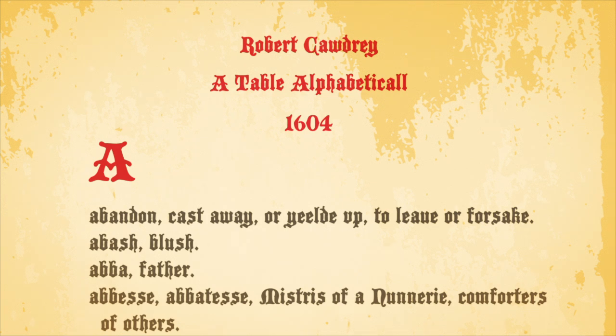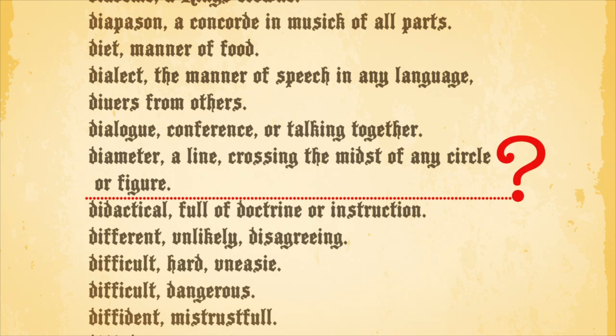It took until 1604 for the first dictionary to be written by Robert Cawdrey. It contained two thousand five hundred words. Dictionary was not one of them.